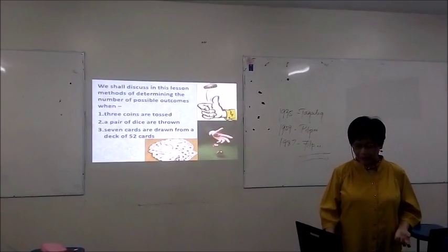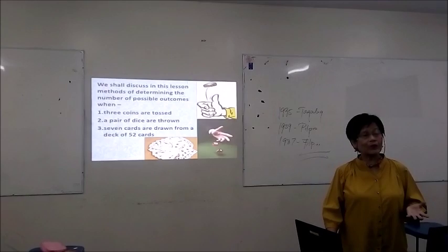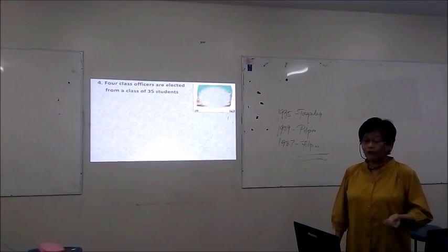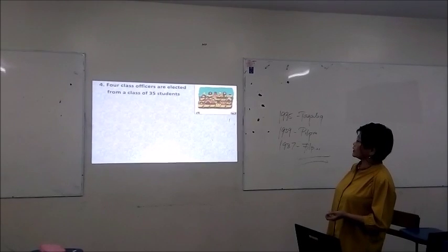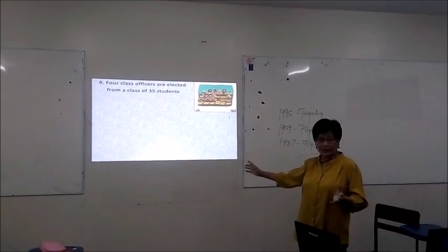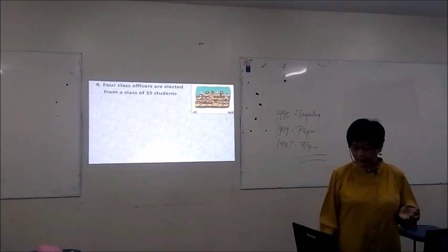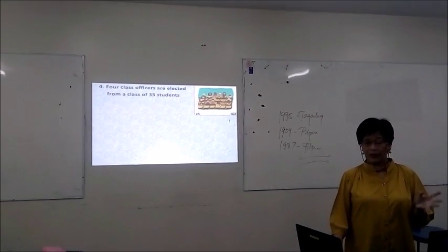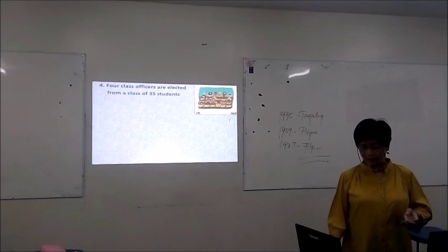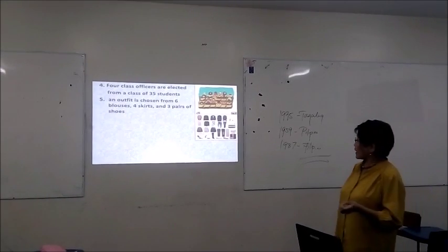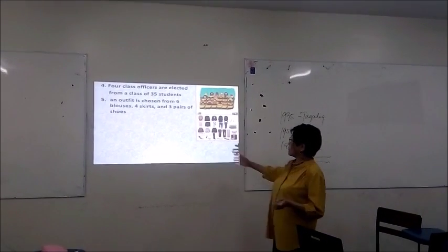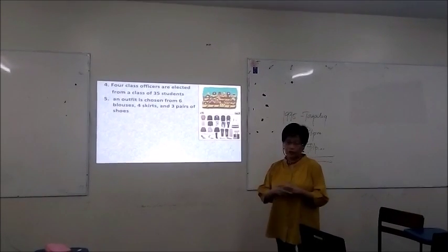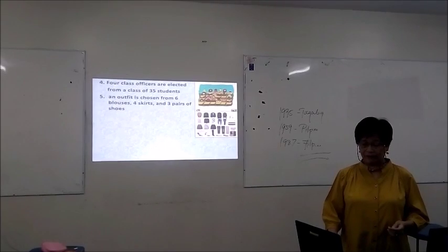So here you see these examples where you will apply the techniques. Four class officers are selected from a class of 35 students — if you have a class of 35 students and you want to choose four class officers, how many possibilities could you have? Next, an outfit is chosen from six blouses, four skirts, and three pairs of shoes. How many possible outcomes can you have?